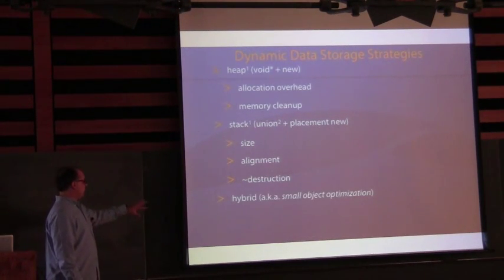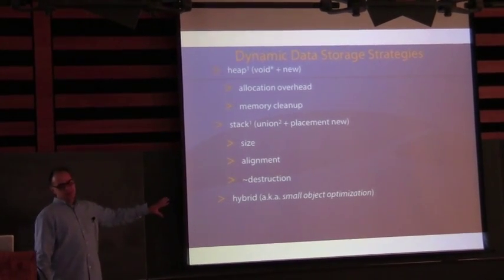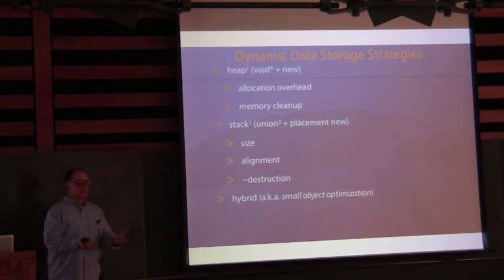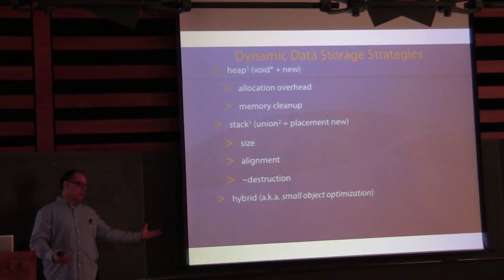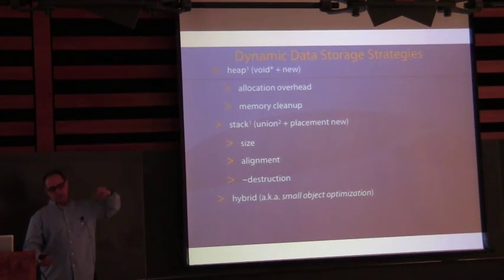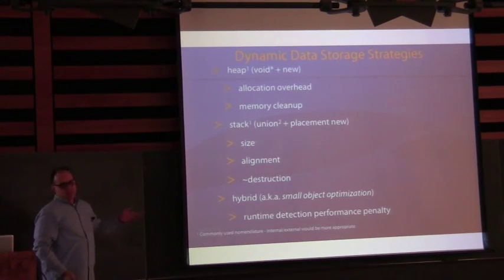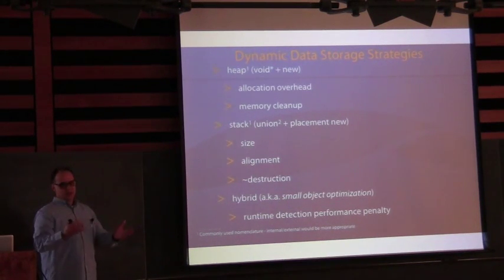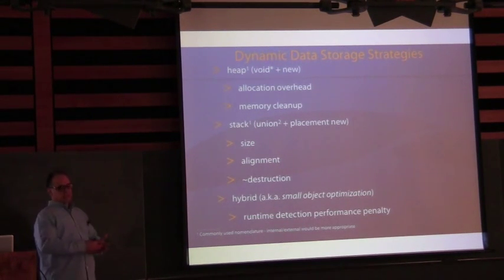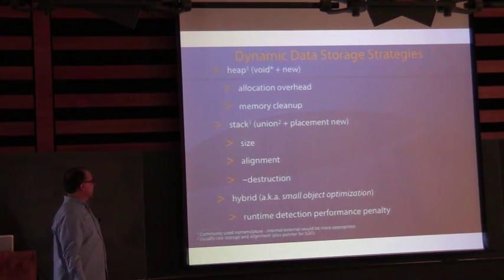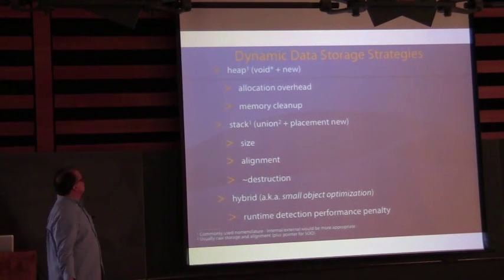Then there are hybrid solutions, also known as small object optimization. You look at how big the value is at runtime and make a decision — predefined at compile time — whether to allocate internally or on the heap. With this you pay a runtime performance penalty because you have to check the size of what you're putting in. And in the case where you allocate on the heap, you also pay the memory allocation price.